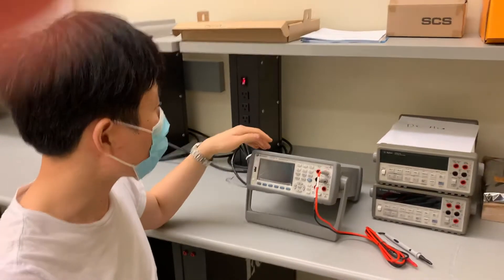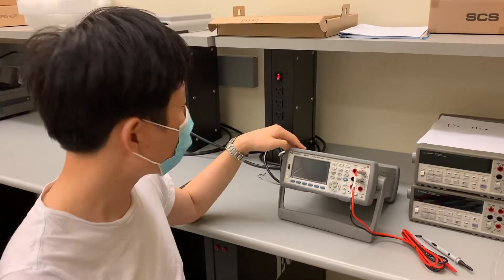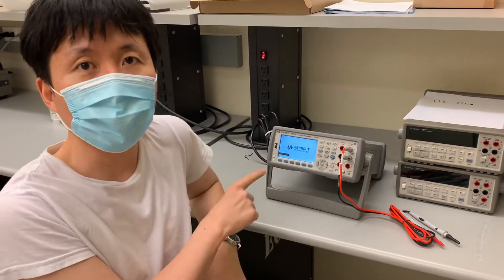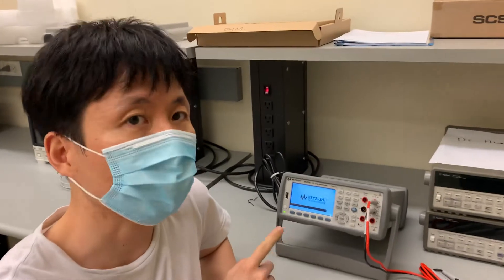Okay, so this is our seven and a half digital multimeter. If you turn it on, this is good for very high accuracy voltage and current measurement.